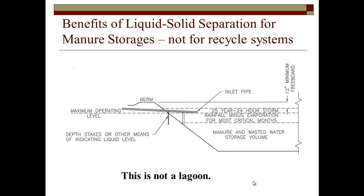The point is, storage is simply that — it's how much volume you want for manure and waste water. You've got to account for critical rain, net rain for your critical months, your 25-year, 24-hour storm, whatever freeboard your state requires. Our state's up to two-foot freeboards now because of hurricanes. So that's not a lagoon. We don't recommend storages for recycled systems. Back when we started recycling, the original literature told us we could get into trouble with ammonia, odor, and pathogens.